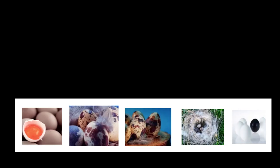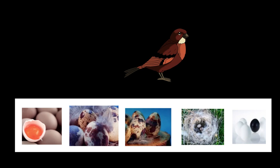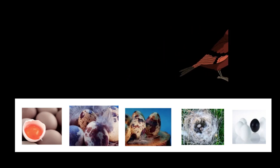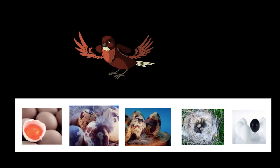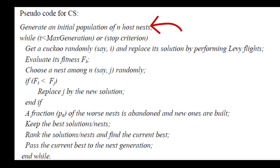Here you can see the pseudocode for this algorithm. The cuckoo search algorithm is inspired by the behavior of the cuckoo bird — the cuckoo bird lays its eggs in the nest of other birds to increase the offspring's chances of survival. When the cuckoo bird lays their eggs in the nest of other species, there is a possibility that the eggs are discovered by the host bird. If the host bird discovers the cuckoo egg, they either throw it out or abandon the nest and build a new one.